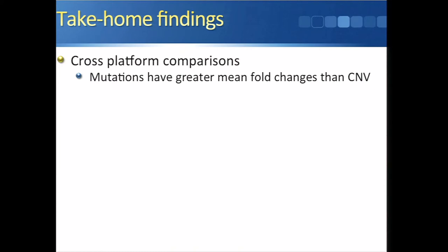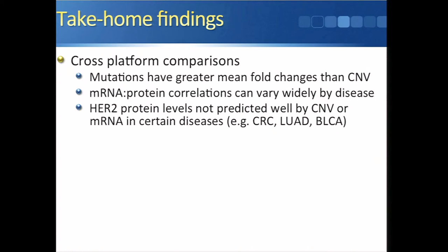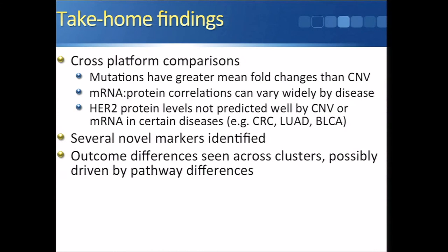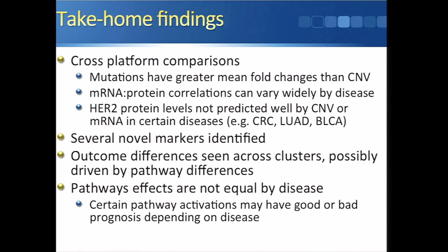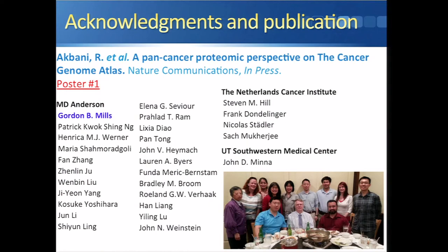To summarize, the take-home findings are: mutations on average have greater fold changes than copy number variations, possibly due to the larger number of passenger events in the copy number domain. mRNA-protein correlations vary widely by disease and are by no means uniform. HER2 protein levels are not predicted well by copy number or mRNA in certain diseases like colorectal, lung adeno, and bladder, but are predicted well in breast cancer. Several novel markers were identified, with outcome differences seen across clusters possibly driven by pathway differences. Pathway effects are not equal by disease, and protein-protein correlations also vary by disease — for example, PTEN versus phospho-AKT had a strong correlation in lung squamous but not in other cancers.